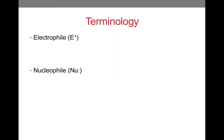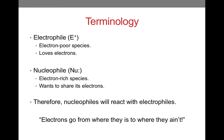Before we jump to drawing mechanisms, it is important to first review some terminology. We will be using the terms electrophile and nucleophile quite frequently. An electrophile is a species that is electron-deficient, so it loves to gain electrons. A nucleophile, on the other hand, is an electron-rich species, so it loves to share its electrons. Given these two definitions, we can see that nucleophiles will react with electrophiles.